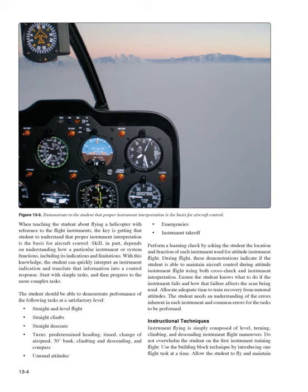The student should be able to demonstrate performance of the following tasks at a satisfactory level: straight and level flight, straight climbs, straight descents, turns to a predetermined heading, timed turns, change of airspeed, 30-degree bank turns, climbing and descending turns, compass turns, unusual attitudes, emergencies, and instrument takeoff. Perform a learning check by asking the student the location and function of each instrument used for attitude instrument flight. During flight, these demonstrations indicate if the student is able to maintain aircraft control during attitude instrument flight using both crosscheck and instrument interpretation. Ensure the student knows what to do if an instrument fails and how that failure affects the scan being used. Allocate adequate time to train recovery from unusual attitudes. The student needs an understanding of the errors inherent in each instrument and common errors for the task to be performed.